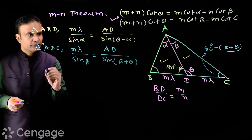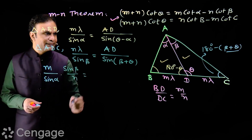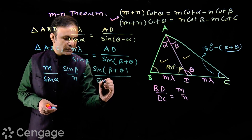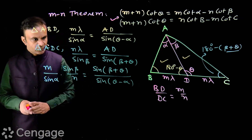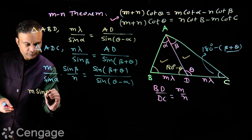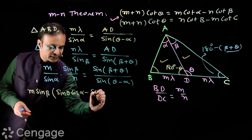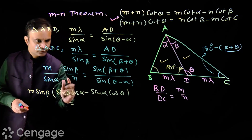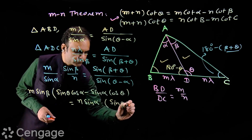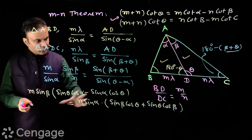Now we divide the first result by the second result, giving m over sin alpha multiplied by sin beta over n, equal to sin(beta + theta) over sin(theta minus alpha). Cross-multiplying and expanding, we get: m·sin beta times (sin theta·cos alpha minus sin alpha·cos theta) equals n·sin alpha times (sin beta·cos theta plus sin theta·cos beta).